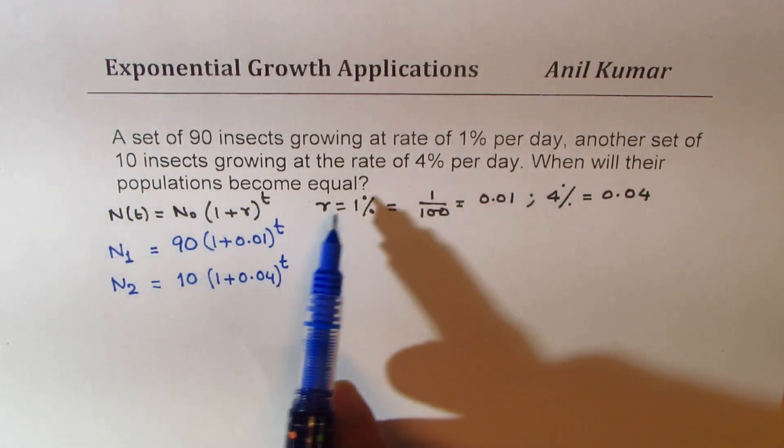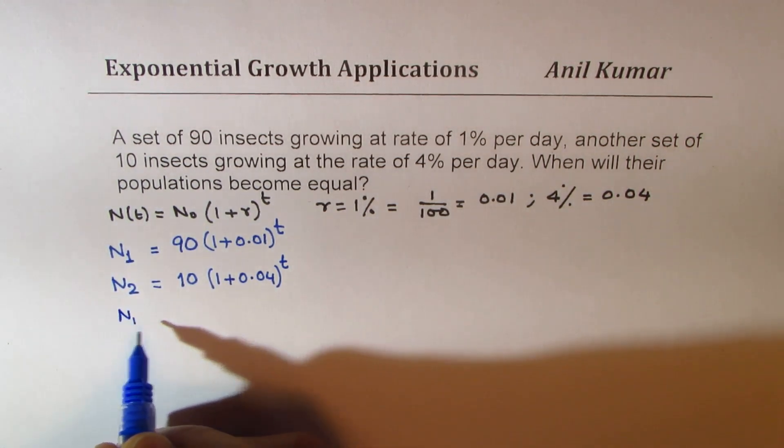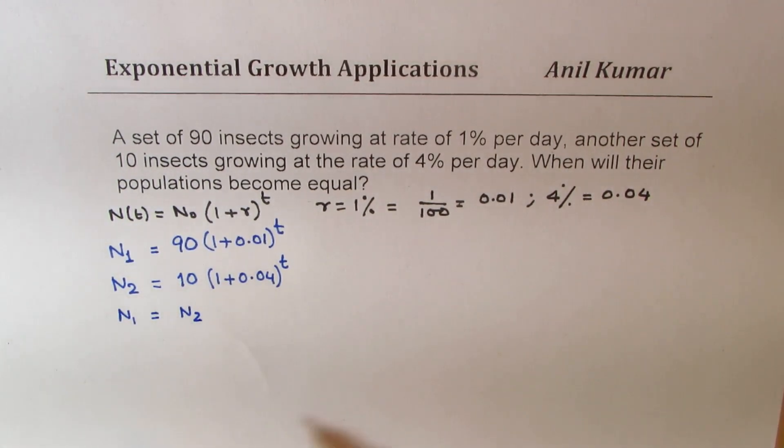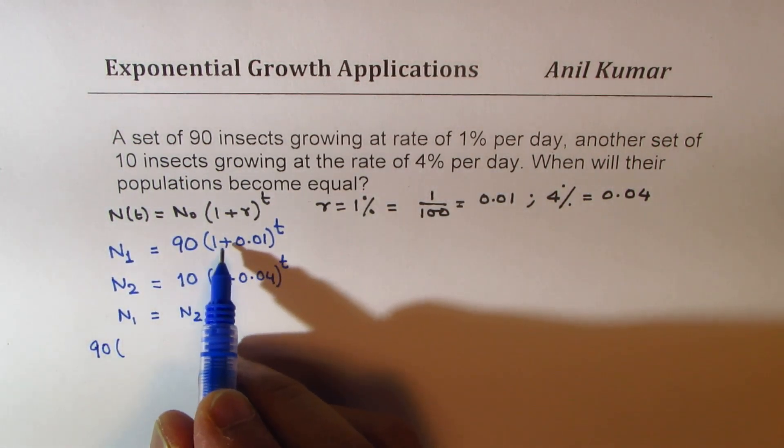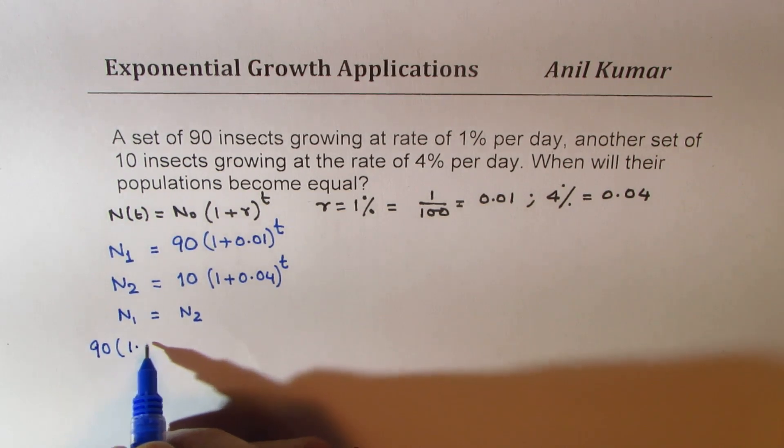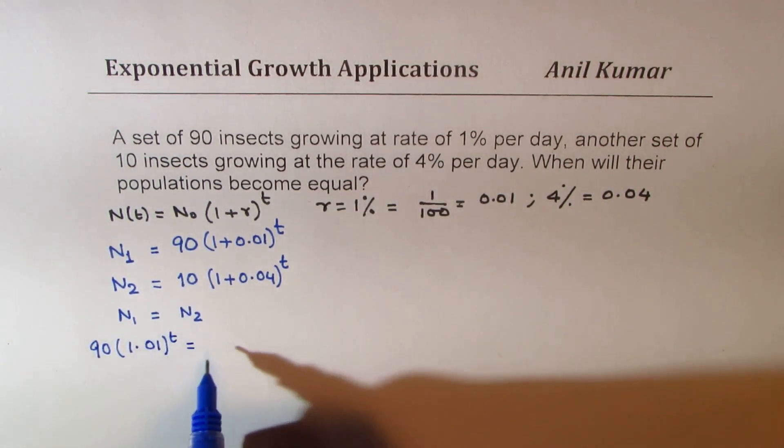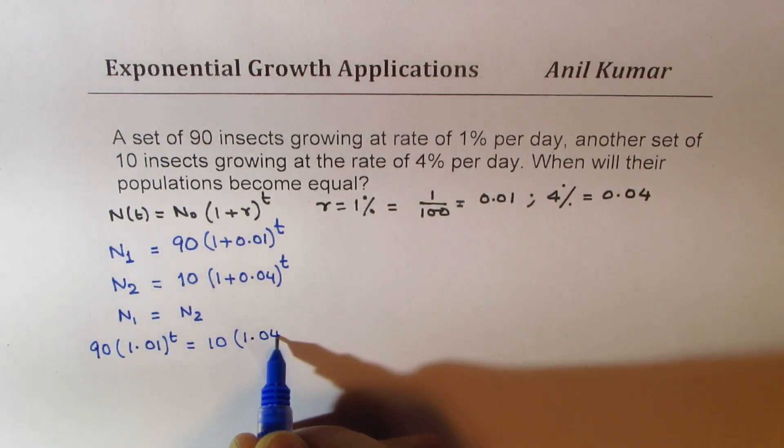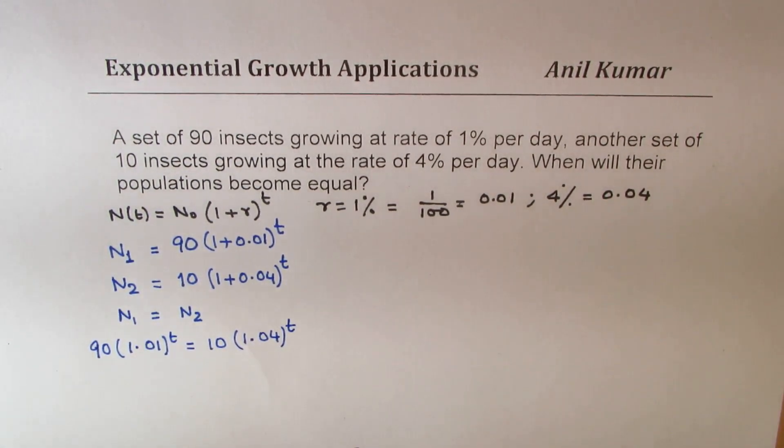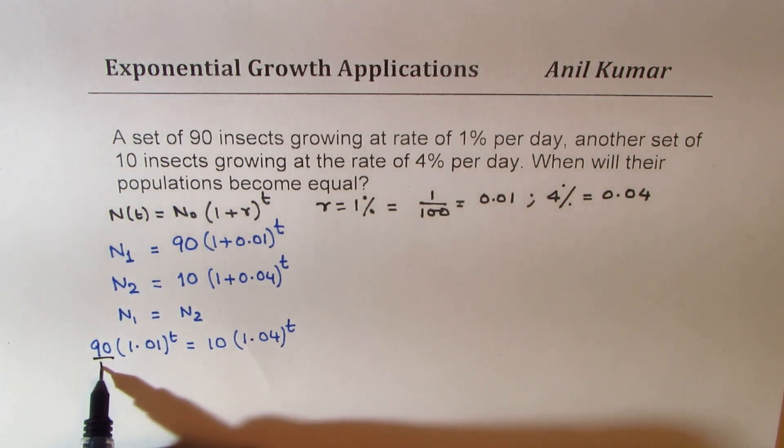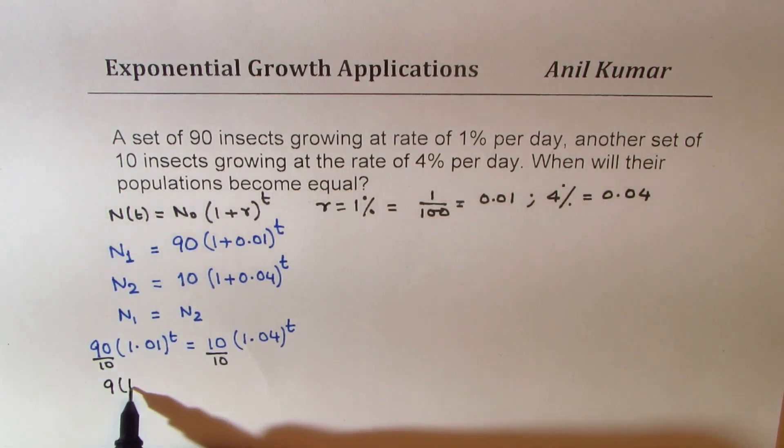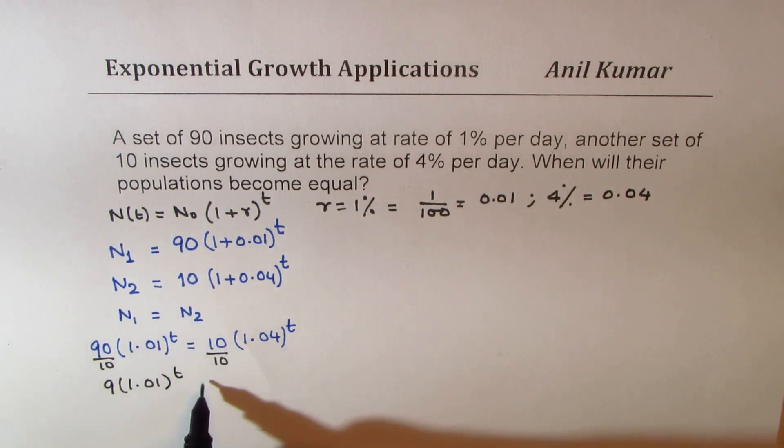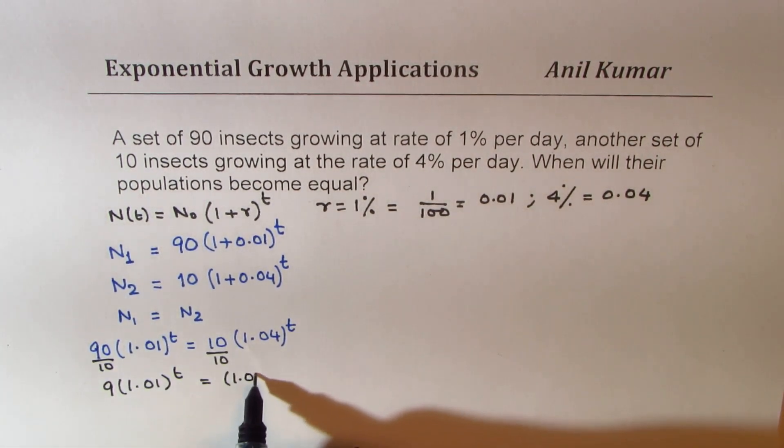When will their population become equal? That means when will number of insects of one type be equal to number of insects of the other type. So we can equate these two equations. So what we get here is 90 times 1.01 to the power of t equals 10 times 1.04 to the power of t. Now you can simplify this. Dividing both sides by 10, we get 9 times 1.01 to the power of t equals 1.04 to the power of t.